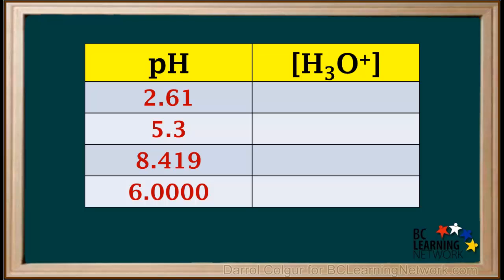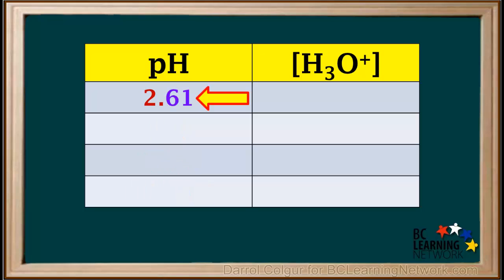Here are a few examples for you to try. Make sure you express the hydronium ion concentration to the number of significant figures used in each given pH. Pause the video and try these, then resume the video to check your answers.